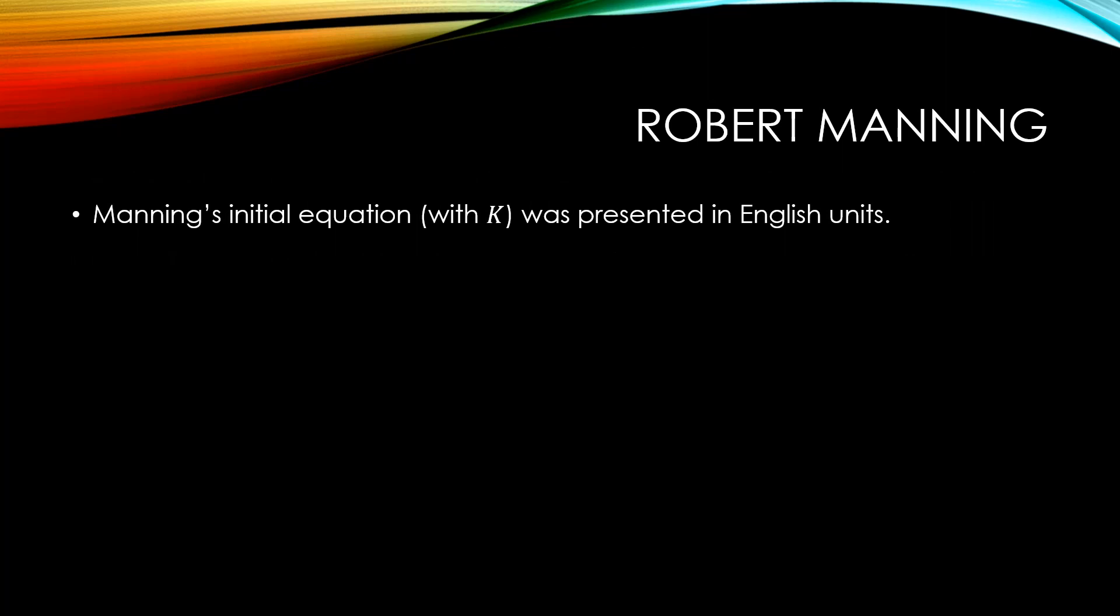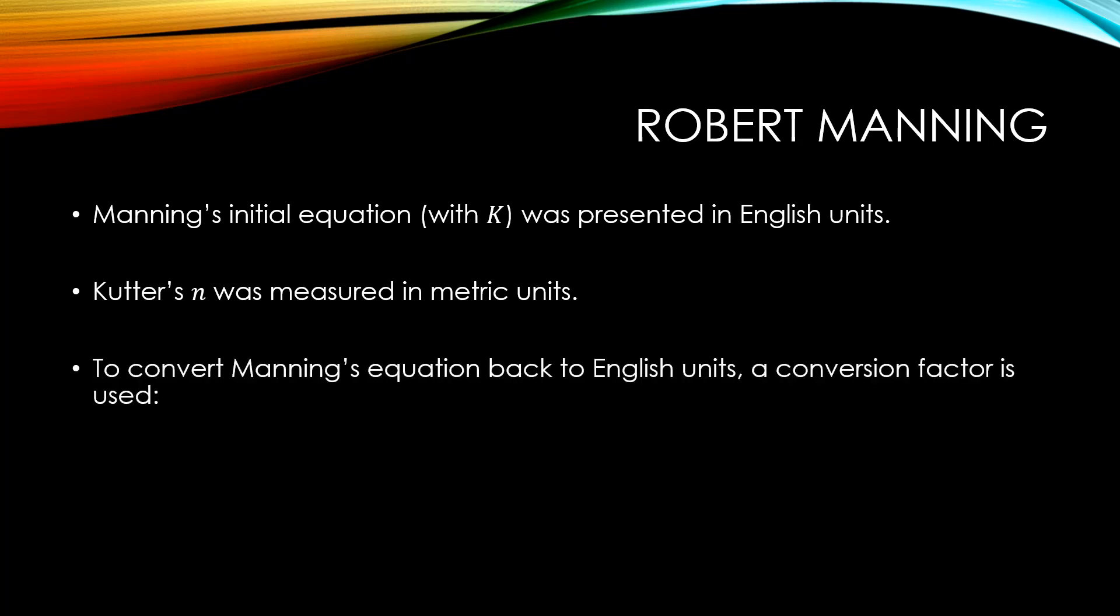Manning's initial equation, which used his k coefficient, was presented in English units, so any values of k that he may have found would have been in English units. However, Kutter's n values were measured in metric units. This means that when Manning's equation was published using Kutter's n, that equation would only be valid for metric units. In order to convert Manning's equation back into English units, a conversion factor was necessary.